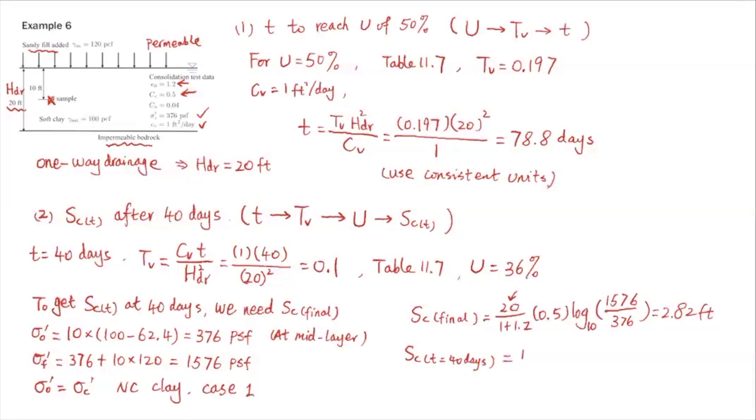We have this final consolidation settlement. Then Sc(t) at 40 days is basically the average degree of consolidation U times Sc final. This comes directly from the definition of U. That's how average degree of consolidation is defined. So this is 36% times 2.82. The final answer is 1.02 feet. That's the consolidation settlement Sc when t is 40, at time of 40 days.